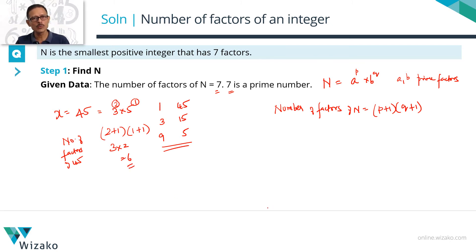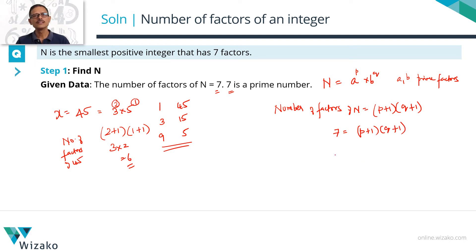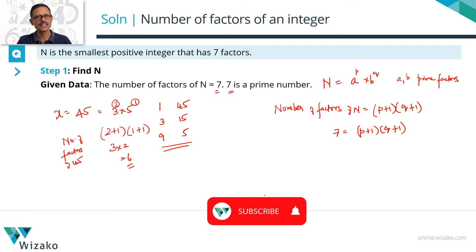Now, what do we know about N? N has got 7 factors, so number of factors of N equals 7, which equals P plus 1 times Q plus 1. Since 7 is a prime number, it has exactly two factors and can be expressed as a product of two numbers in only one way.